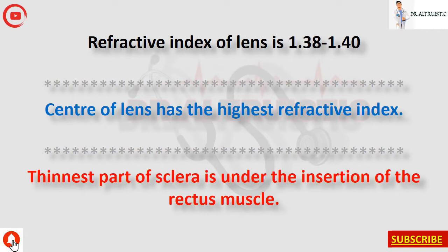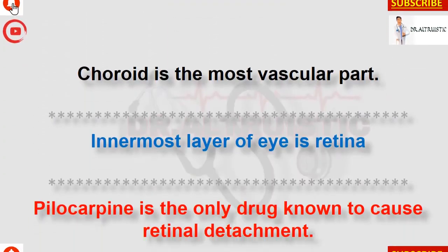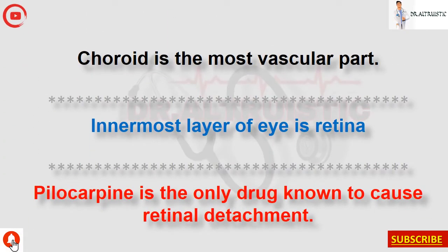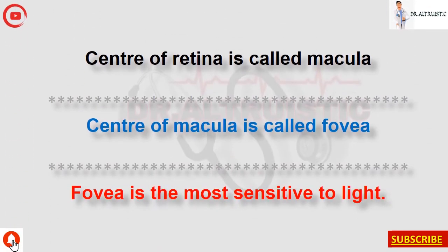Thinnest part of the sclera is under the insertion of the rectus muscle. Choroid is the most vascular part of the eye. Innermost layer of the eye is the retina. Pilocarpine is the only drug known to cause retinal detachment. Center of the retina is called the macula; center of the macula is called the fovea, which is the most sensitive to light.